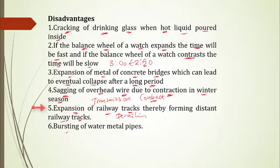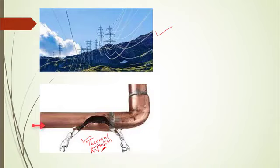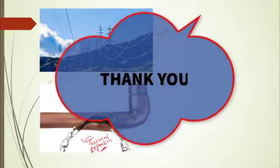Another disadvantage is the bursting of metal water pipes. Imagine going to fetch water and the tap just bursts and begins to leak — this can happen when the pipe has been heated so much that, as a result of thermal expansion, it becomes unable to hold itself and must give way and burst. Thank you so much for joining this lesson. To refresh your memory on what we've discussed, please take the test that will appear on your screen.